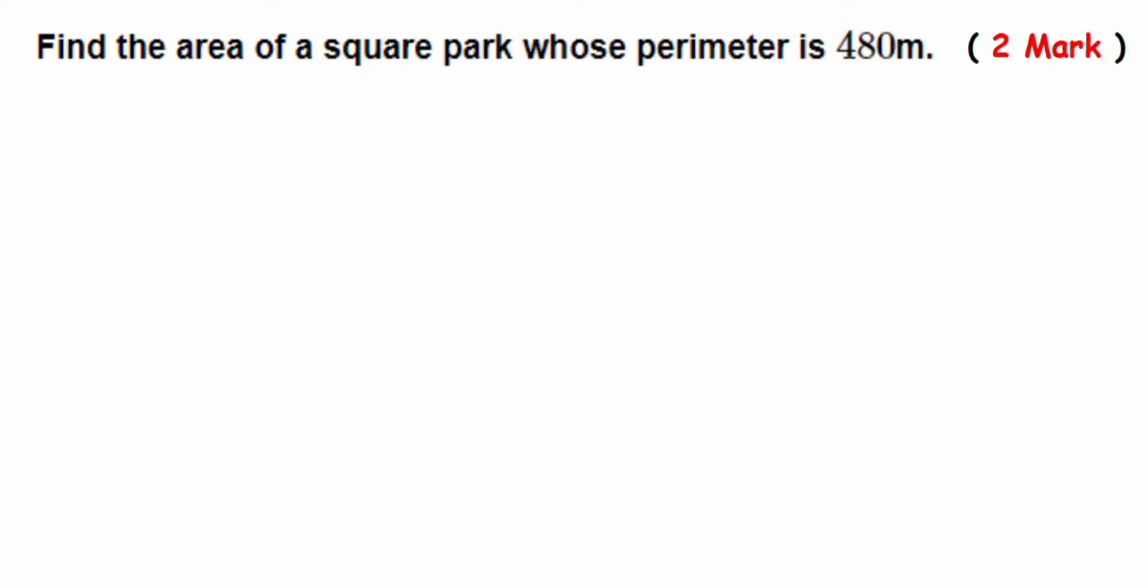Hey everyone, so here's a question. It's a two-mark question from perimeter and area. The question is: find the area of a square park whose perimeter is 480 meters. So they have given here the perimeter of a square park, which is 480 meters. We have to find out the area, but we don't know what is the side.